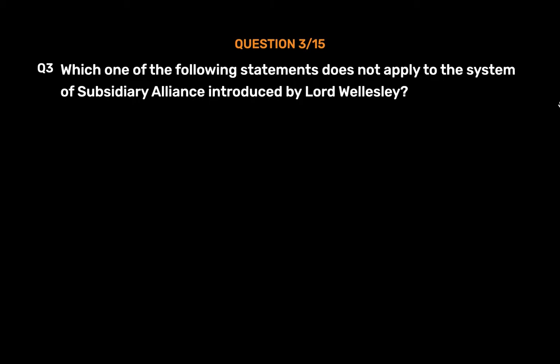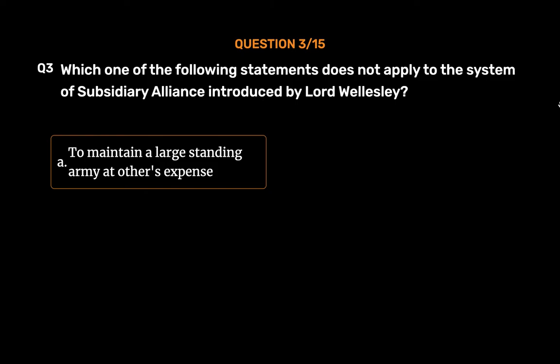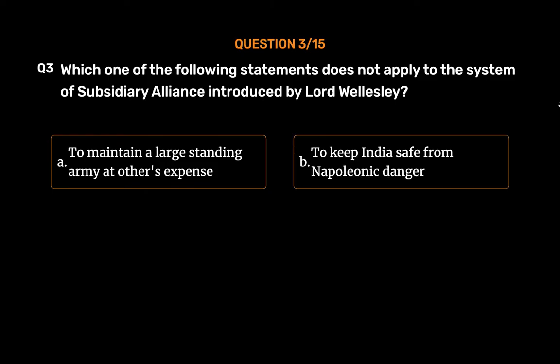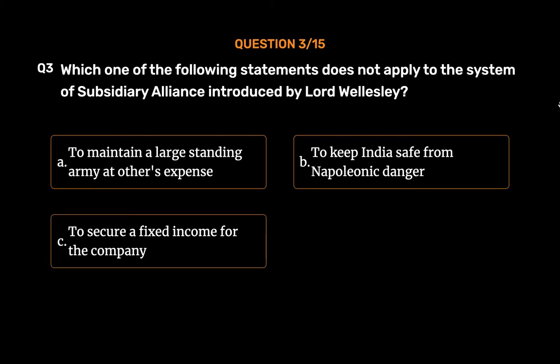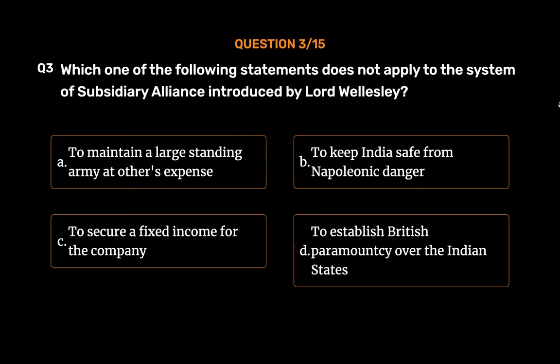Question No. 3. Which one of the following statements does not apply to the system of subsidiary alliance introduced by Lord Wellesley? Option A: To maintain a large standing army at others' expense. Option B: To keep India safe from Napoleonic danger. Option C: To secure a fixed income for the company. Option D: To establish British paramount sway over the Indian states. The correct answer is Option C: To secure a fixed income for the company.